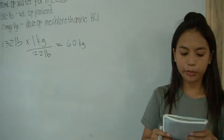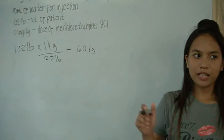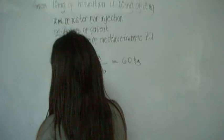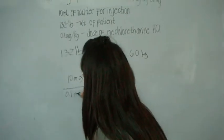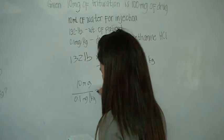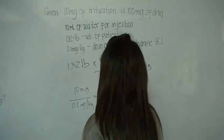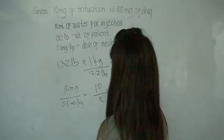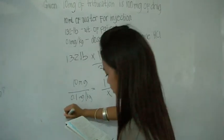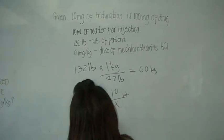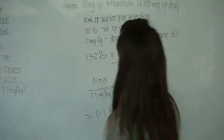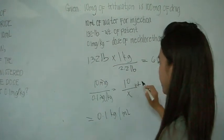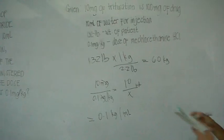of doing ratio and proportion to cancel out the milligram unit. 10 mg over 0.1 mg per kilogram equals 10 ml over X. The answer is 0.1 kg per ml.